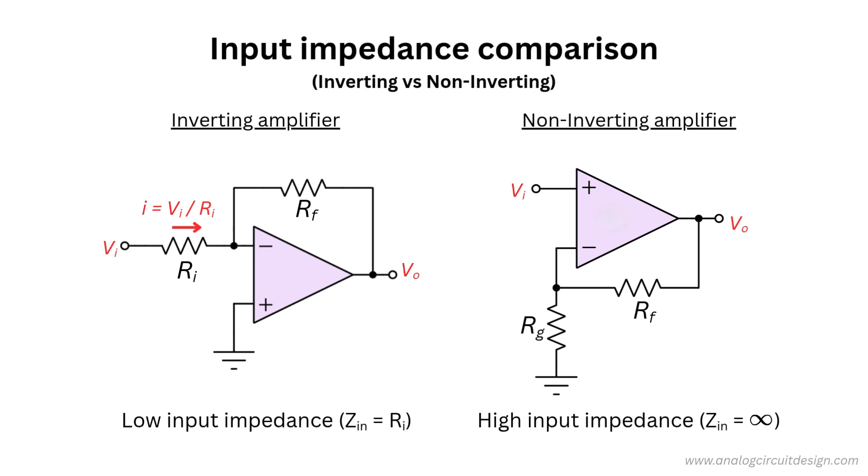In contrast, the input resistance, or impedance, of non-inverting configuration is very high. Ideally, it should be infinite input impedance. In the real world, it is limited by the transistors used inside the op-amp. The value of input impedance in modern op-amps range from several mega-ohms to several giga-ohms.